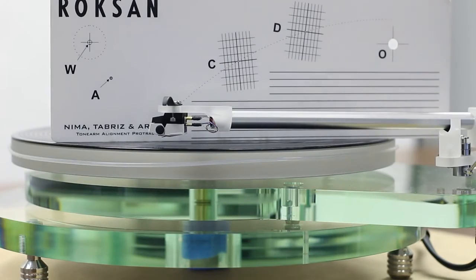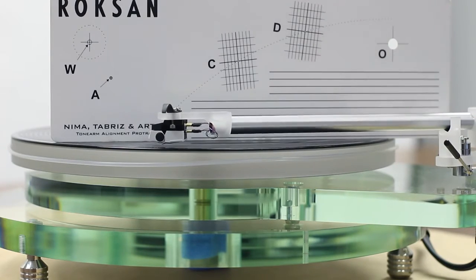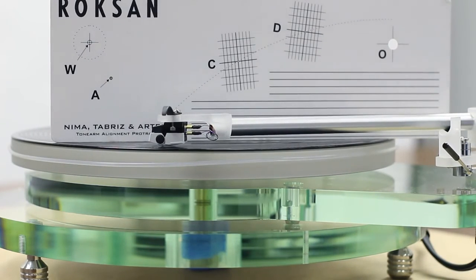Adjust the arm height so that the bottom surface of the head shell and the record surface are parallel as seen from the side.